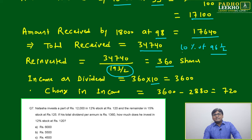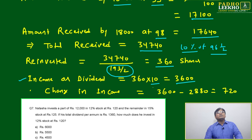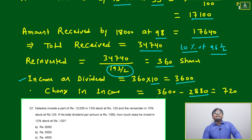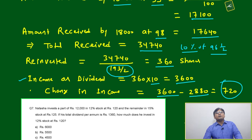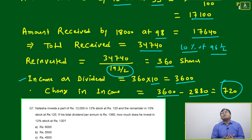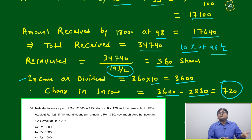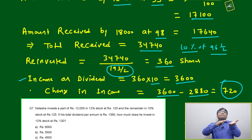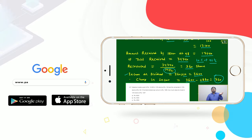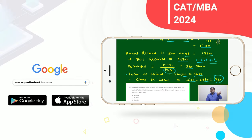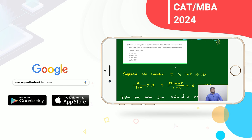The dividend is 10 rupees per share, so total income = 360 × 10 = 3,600. Earlier income was 2,880, now income is 3,600. The change in income = 3,600 − 2,880 = 720. This confirms the shortcut: 2% of the base 32,400 is 648, and 2% of the effective amount of 36,000 gives exactly 720.